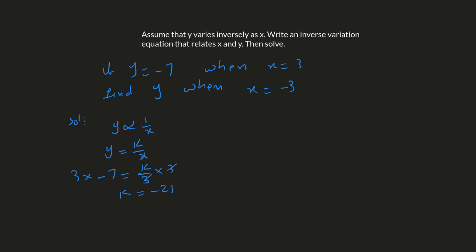The equation will be y equals negative 21 over x. Now we have to find y when x equals negative 3. Plug in x equals negative 3: y equals negative 21 over negative 3, which gives y equals 7. That's the answer. Hope it makes sense. Now question number 10.